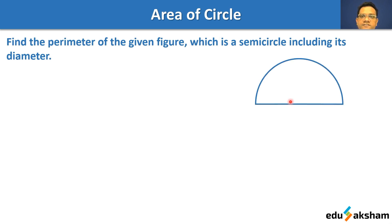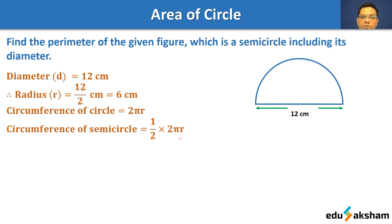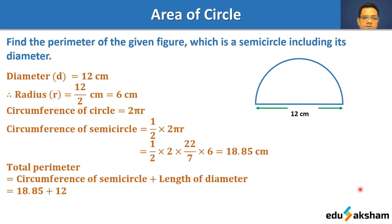Now find the perimeter of a semicircle including its diameter, where the diameter is 12 centimeters. Radius = 6 centimeters. The circumference of a full circle would be 2πr, so the curved part of the semicircle is half of that, which is πr = (22/7) × 6 = 18.85 centimeters. Adding the diameter: total perimeter = 18.85 + 12 = 30.85 centimeters.